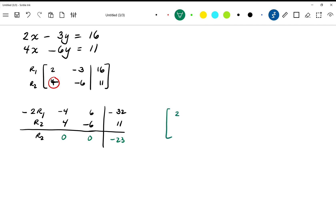So I still have the first row, which is 2, negative 3, and 16, and I have 0, 0, negative 23.